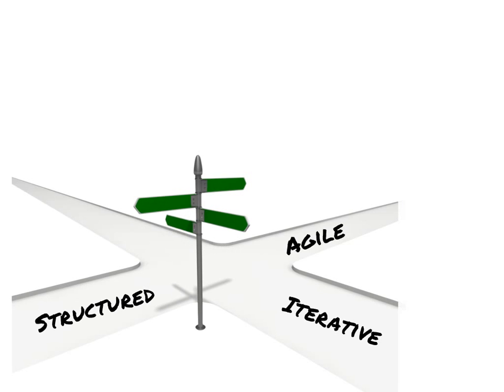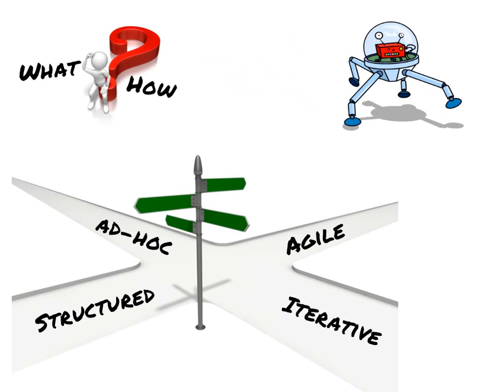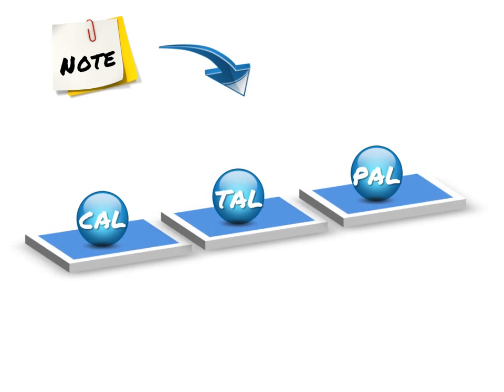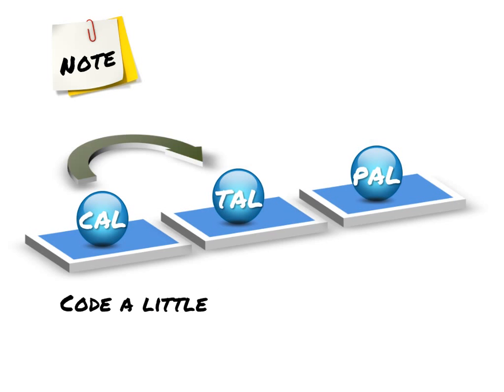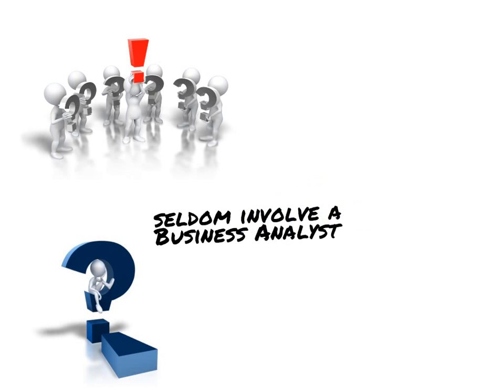Actually, there is a fourth approach: the ad-hoc, also known as the chaotic approach, which assumes you have very little knowledge of what you're doing or how to get it done. This approach is essential when a revolutionary new technology is introduced. There are no clearly defined activities or deliverables, and work progresses in a whatever-needs-to-get-done flow. As a side note, the method is often disparagingly referred to as the code-a-little, test-a-little, pray-a-lot approach. Since little is known about what needs to be done when, requirements activities tend to be ad-hoc, spur-of-the-moment tasks that seldom involve a full-time business analyst.